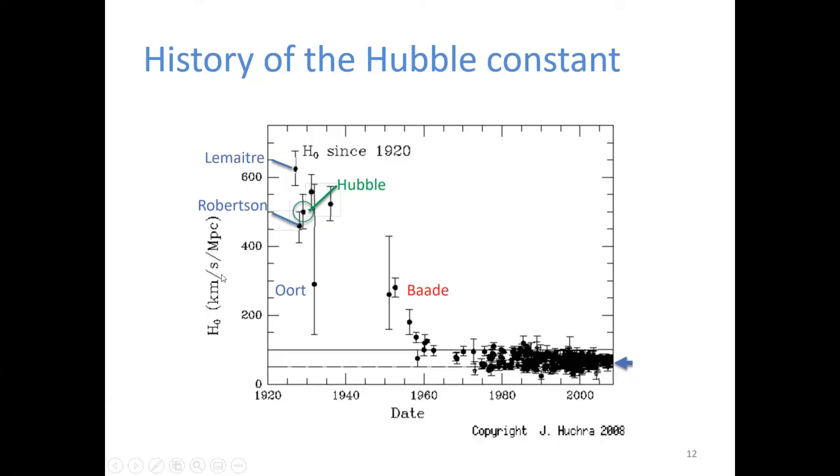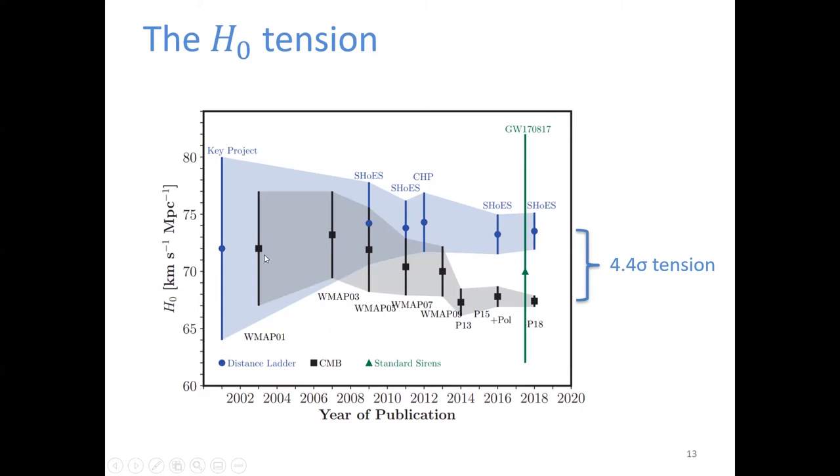The value of Hubble's parameter from Edwin Hubble's result is around 500, and the observational result from Lemaitre is around 600. Both of the early observations have very large error bars. And with more and more accurate observation, the modern result is around 70 now. Before 2011, the observations from CMB and the supernova almost gave the same result of Hubble's parameter. At that time, people looked forward to the two observations giving the same accurate result in the future.